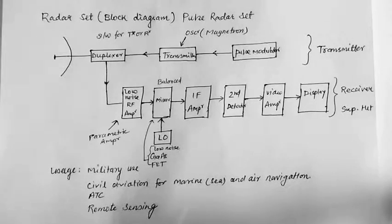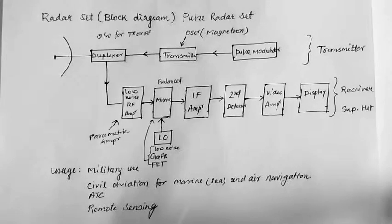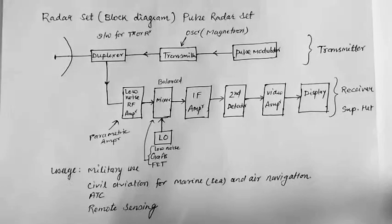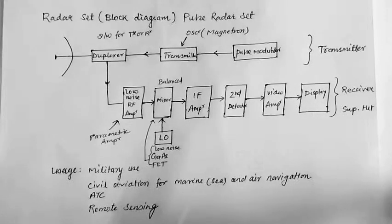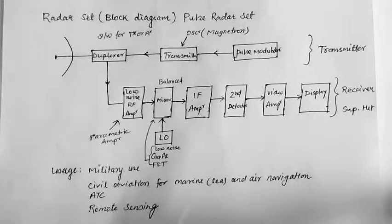Then comes the IF amplifier. IF amplifier amplifies the mixed output at the intermediate frequency without producing appreciable distortions in the pulse waveform of the IF signal. The center frequency of a typical IF amplifier is in the range of 30 to 60 MHz, while the bandwidth is of the order of 1 MHz.